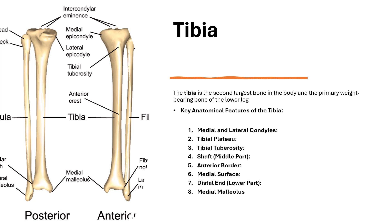Key anatomical features of the tibia: at the proximal end, which is the upper part, we have the medial and lateral condyles. These flat, expanded parts of the tibia articulate with the condyles of the femur, forming part of the knee joint, and are important in allowing knee flexion and extension. You also have the tibial plateaus — the flat surface at the top of the tibia where the condyles are located. The menisci sit here, cushioning the joint and distributing weight during movement.